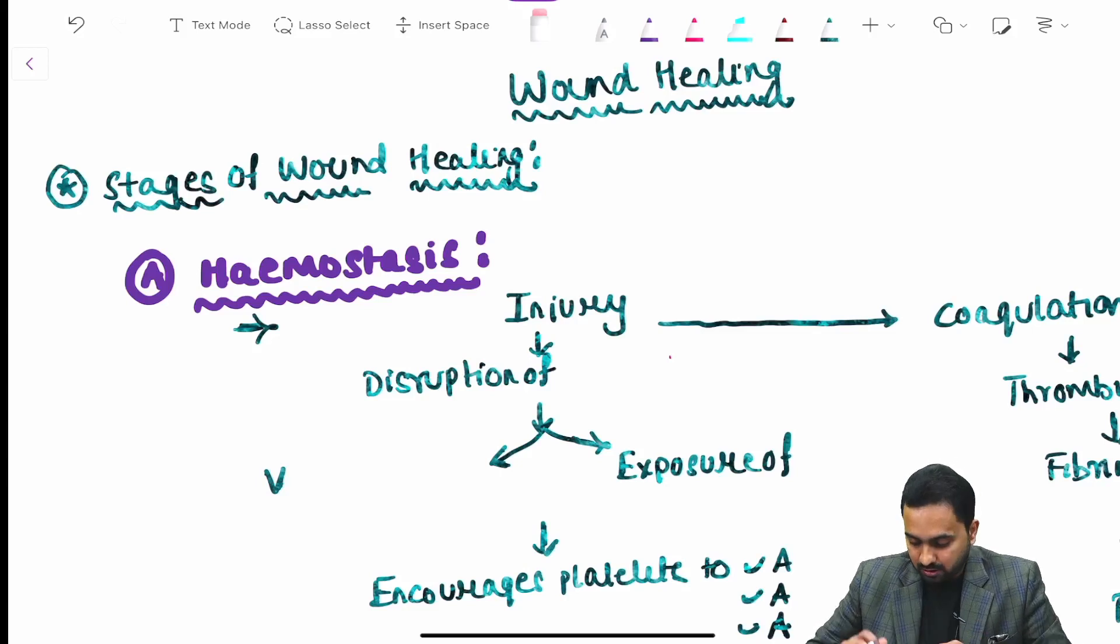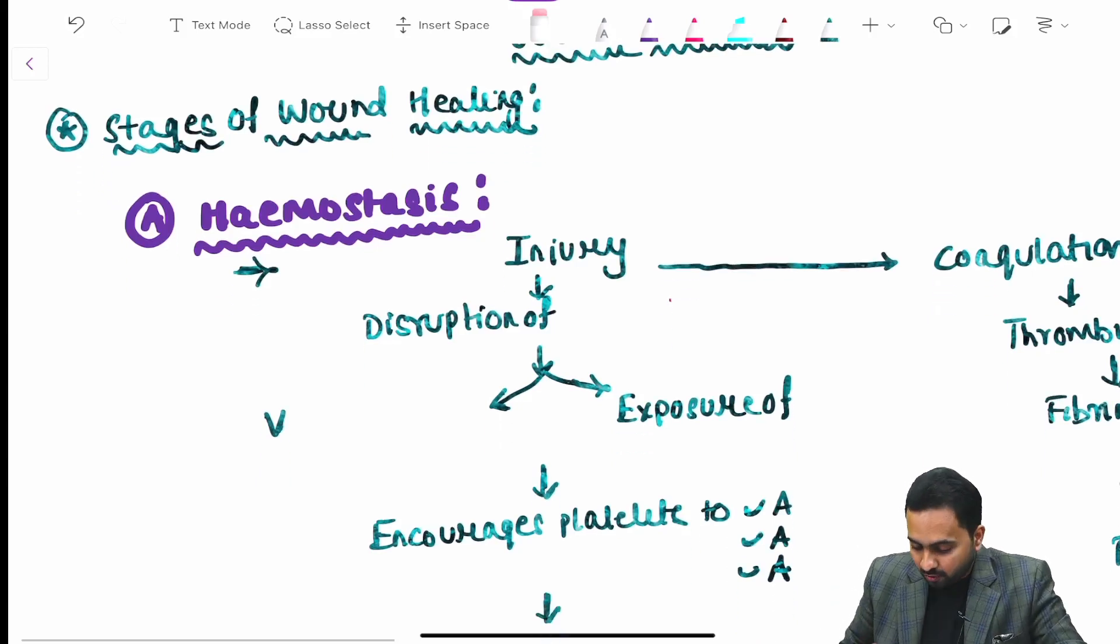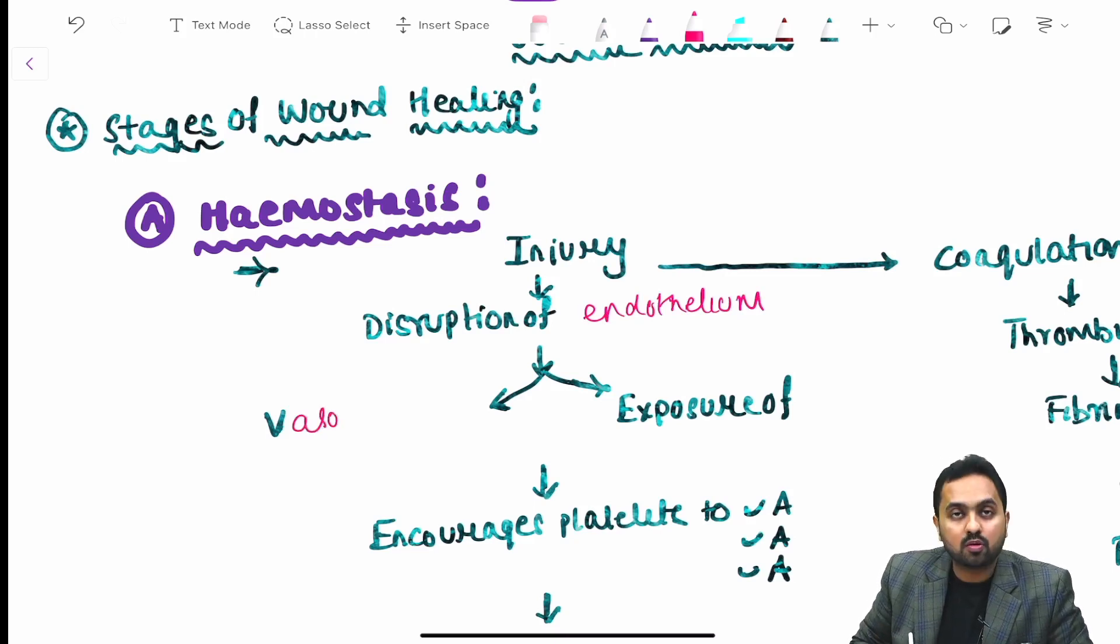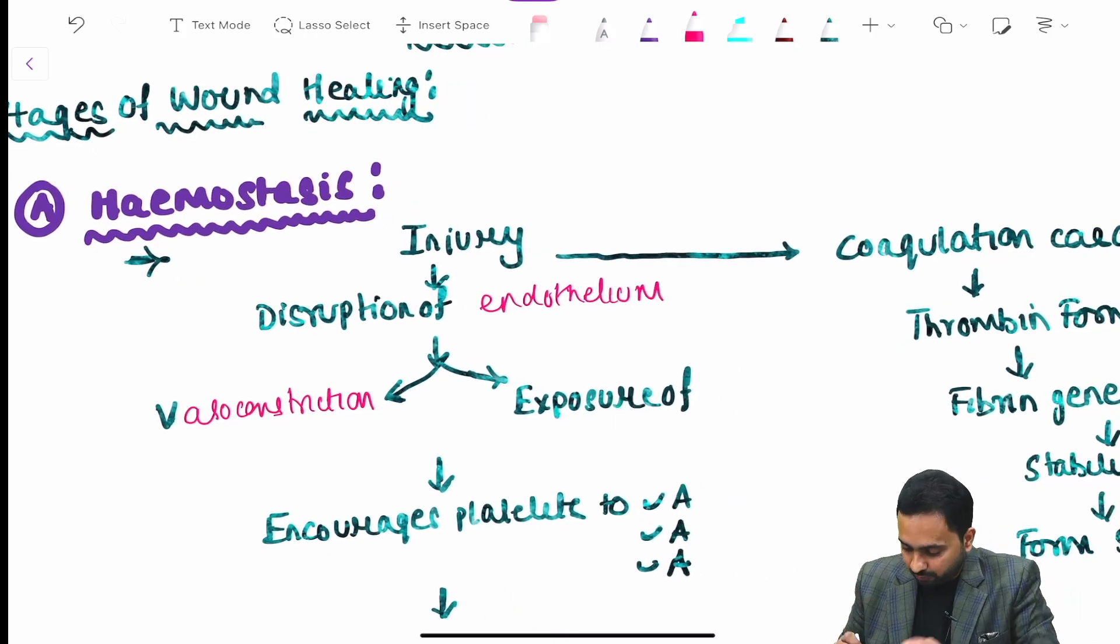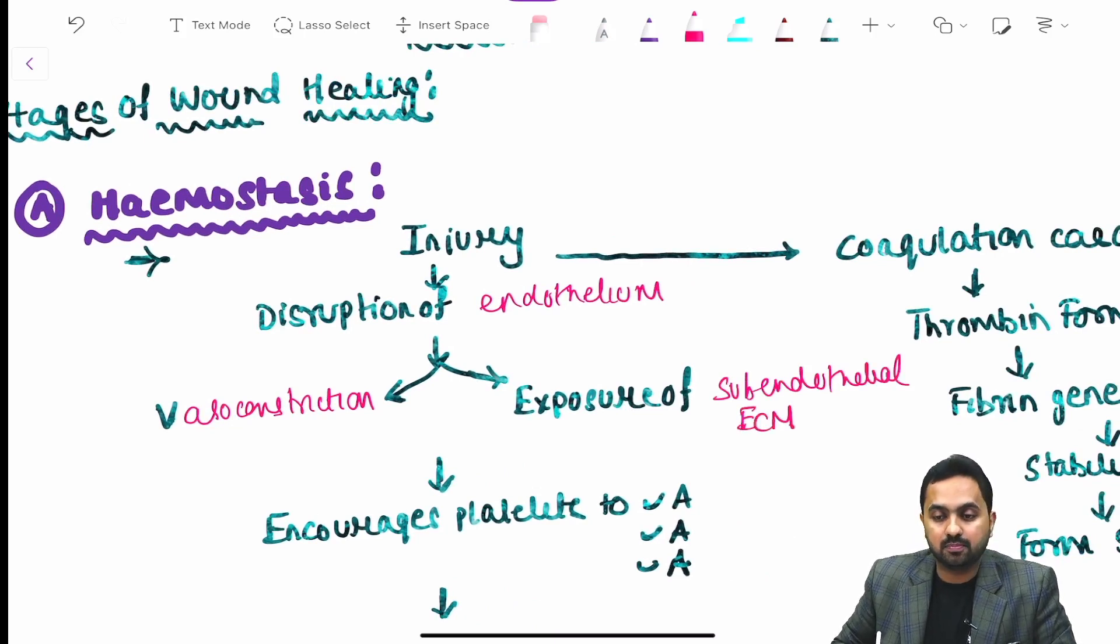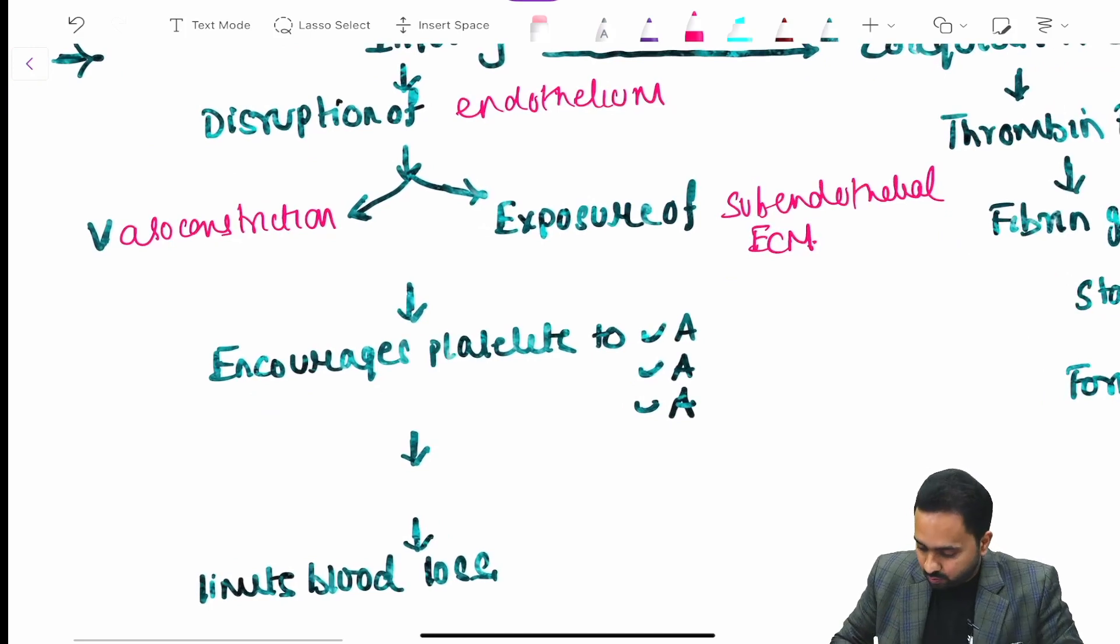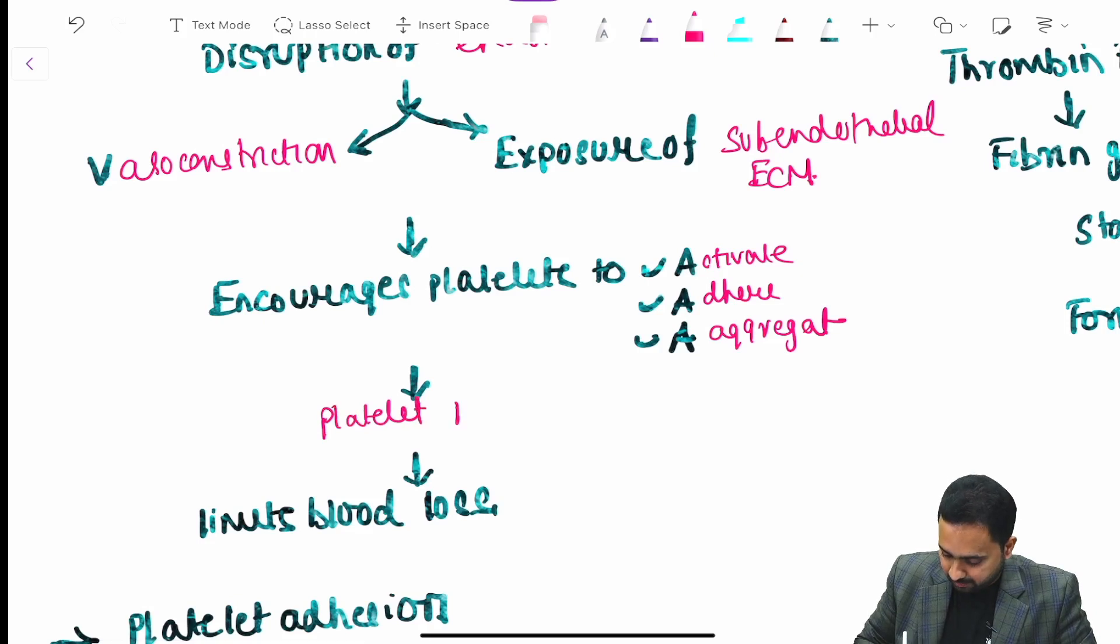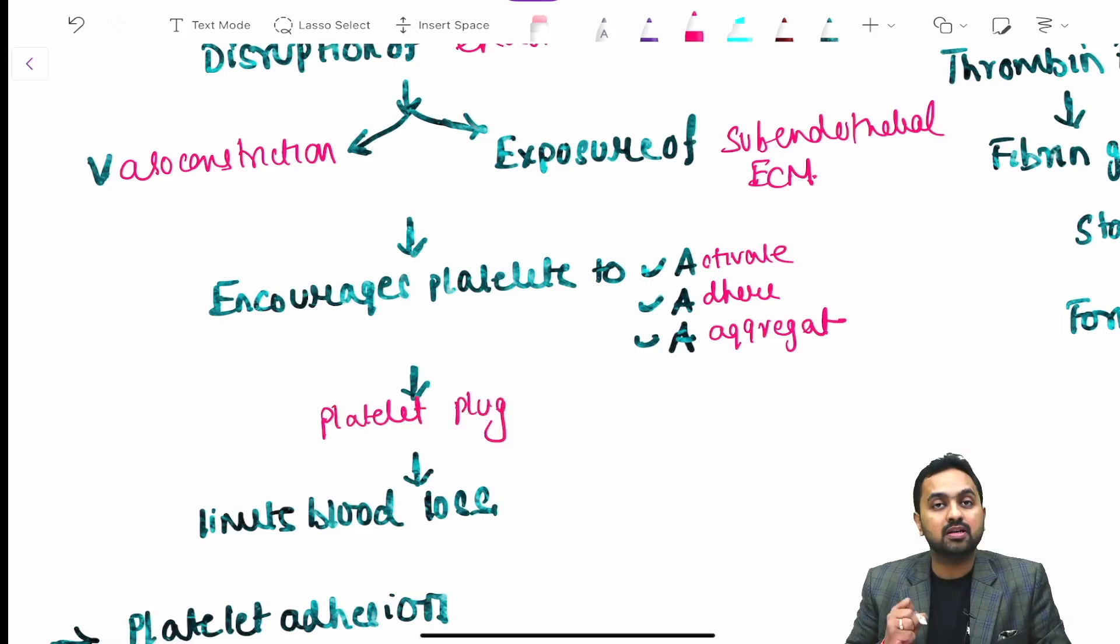The first stage is hemostasis. When there is an injury it causes disruption of your endothelium. This disruption of the endothelium leads to vasoconstriction and exposure of your subendothelial extracellular matrix, which encourages the platelet to activate, adhere and aggregate. This process leads to the formation of your platelet plug which limits your blood loss.